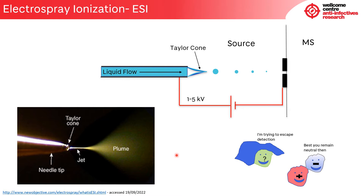The picture at the bottom shows the electrospray process in action. You can just about make out the Taylor cone at the tip of the needle. What you can clearly see is the jet of liquid emitted from the Taylor cone and the dispersal of the charged droplets into the plume at the end of the jet. It should be noted that the electrospray process is stable only under certain conditions, and too high or too low a voltage applied to the needle, or too high or too low a flow rate, would cause the spray to become unstable.